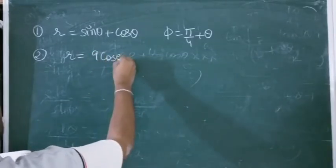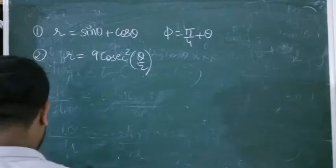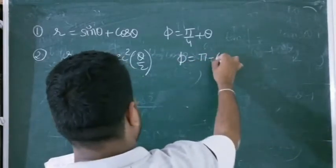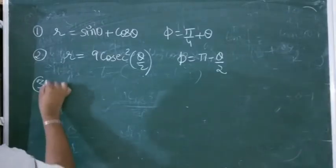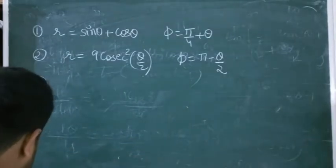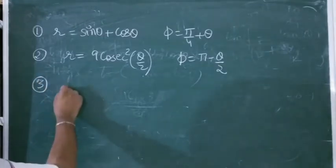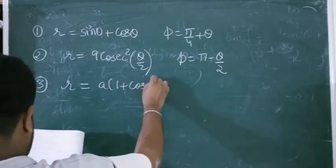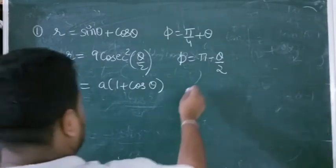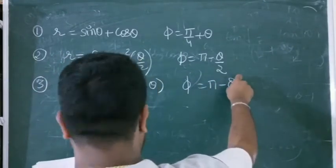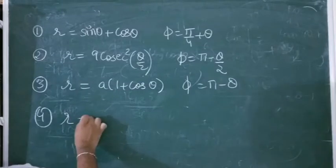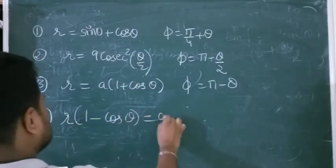Second homework question: r = 9·cosec²(θ/2). The answer I think is φ = π - θ/2. Third question: find φ for r = a(1 - cosθ). Please check these answers and let me know whether they are correct.